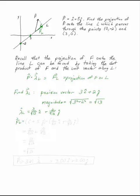The projection of F onto L is the dot product of F itself and this unit vector. So if you take the dot product of those two,